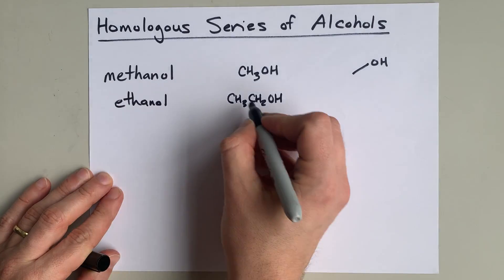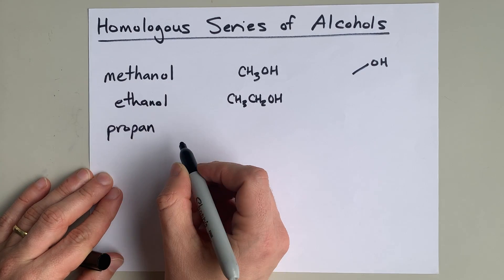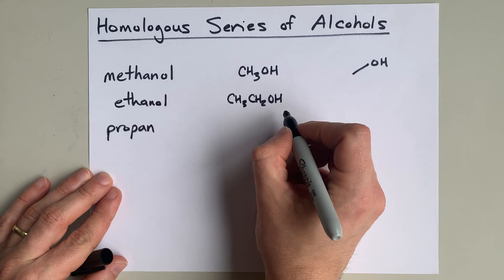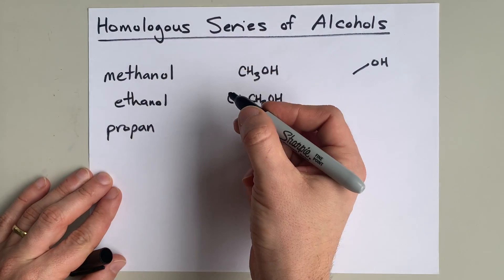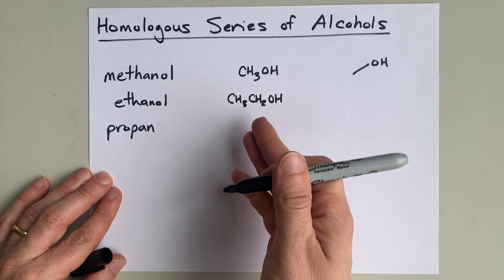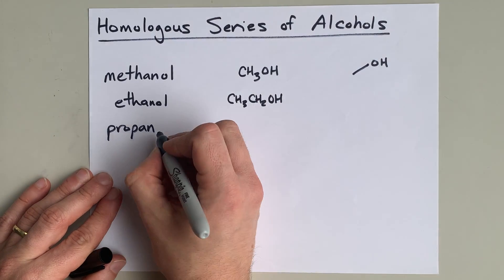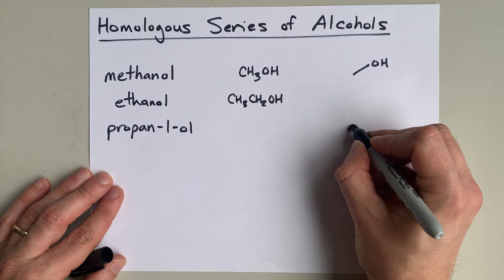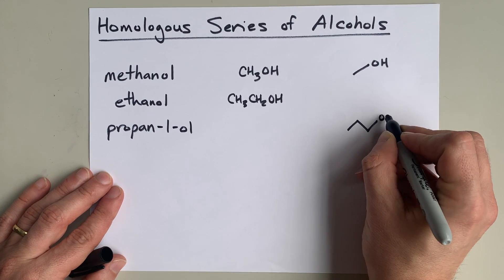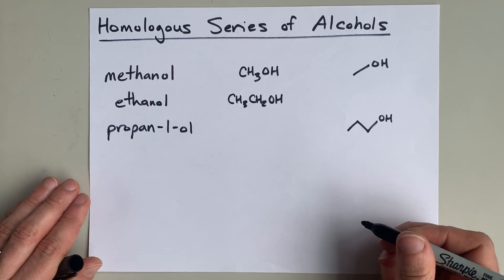And then if you add another carbon to that, you get propanol. By the time you get to three carbons, it's a little ambiguous where you're putting the OH. A homologous series is supposed to have the same functional groups in the same place. And these are both at the ends of the molecule. So I'm going to call this propan-1-ol and say that the OH is always at the end of the molecule, a primary alcohol if you prefer to call it that.